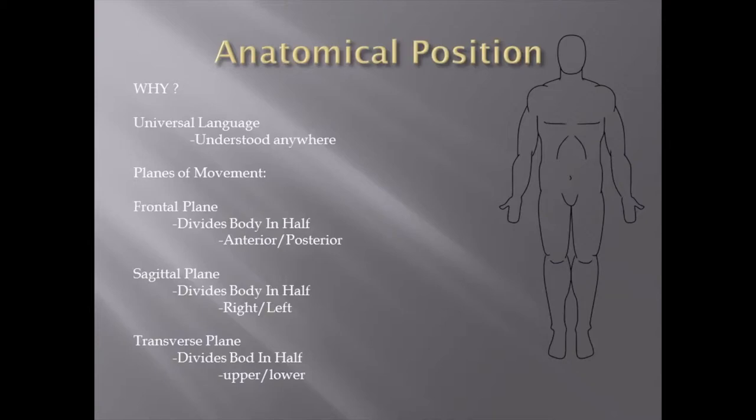For example, the deltoid is your shoulder muscle, but it has three parts. There's the posterior deltoid — the part on the back — which moves a little differently than your anterior deltoid, which is at the front. We'll get into more of this when we talk about anatomy, but it becomes quite important, so you really want to learn these terms.